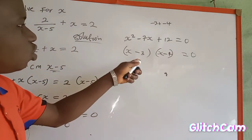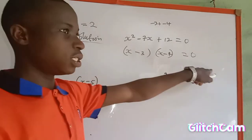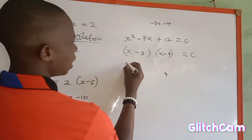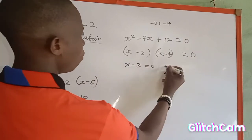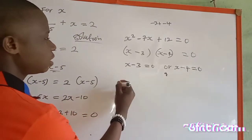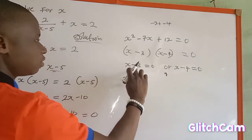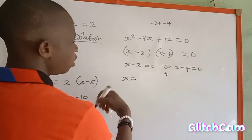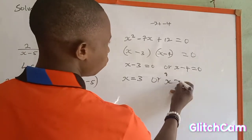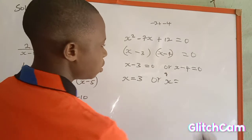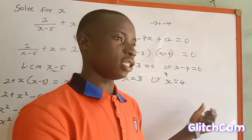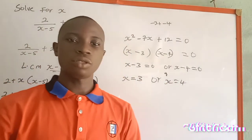So the factored form is (s minus 3)(s minus 4) equals zero. Since the product of two brackets equals zero, either one bracket equals zero or both equal zero. Therefore s minus 3 equals zero, giving s equals 3, or s minus 4 equals zero, giving s equals 4. Therefore the value of s is equal to 3 or s equals 4. Thanks for watching and don't forget to subscribe to my YouTube channel.